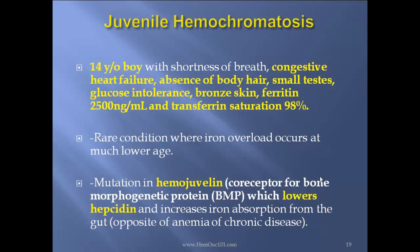Juvenile hemochromatosis case report: A 14-year-old boy with shortness of breath, congestive heart failure, absence of body hair, small testes indicating hypogonadism, glucose intolerance, bronze skin, ferritin of 2500, and transferrin saturation of 98%. This is a rare condition where iron overload occurs at a much younger age. The mutation is in the hemojuvelin gene, which is a co-receptor for bone morphogenic protein, and which lowers hepcidin and increases iron absorption from the gut.